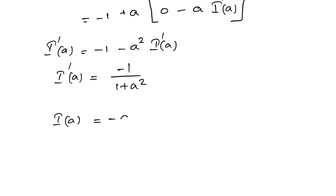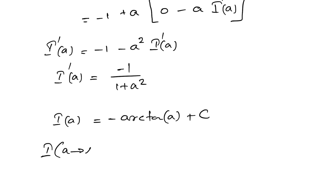We integrate both sides. I(a) = −arctan(a) + C. Taking a → ∞, the left side becomes I(∞) and the right side becomes −arctan(∞) plus C.